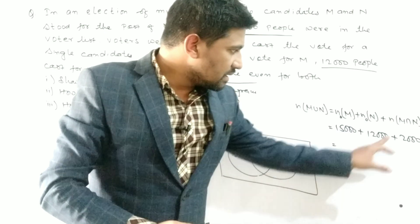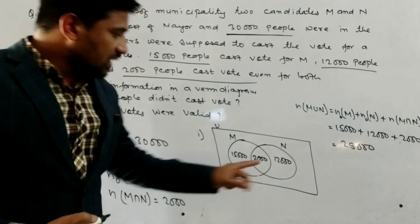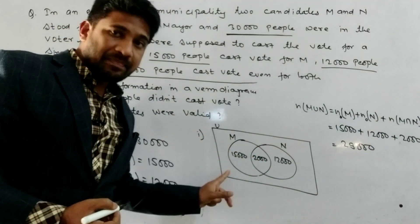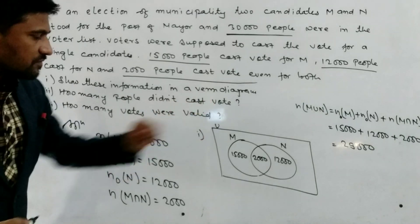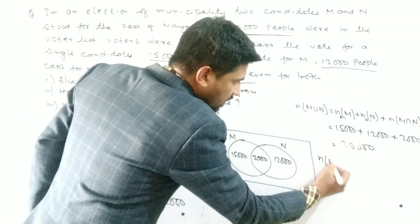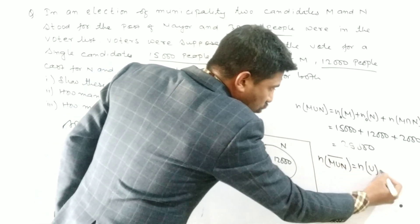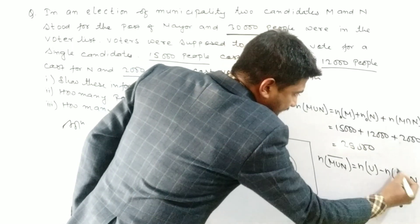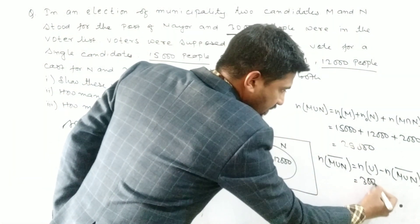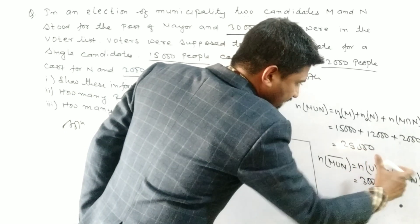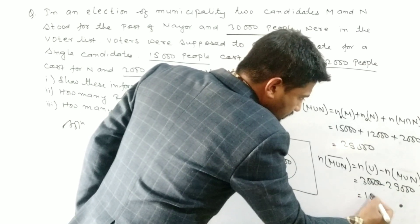Adding these: 15 + 12 = 27, plus 2 = 29, so n(M ∪ N) = 29,000 people cast votes. Note that 2,000 of these are invalid since they voted for both M and N. Now to find people who did not cast a vote: n(M ∪ N)' = n(U) − n(M ∪ N) = 30,000 − 29,000 = 1,000. So 1,000 people did not cast a vote.